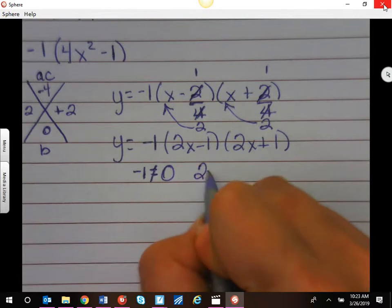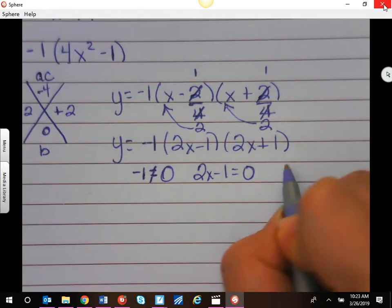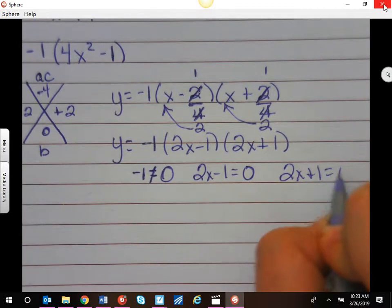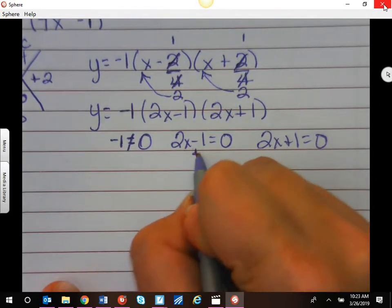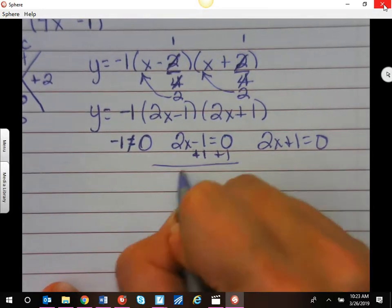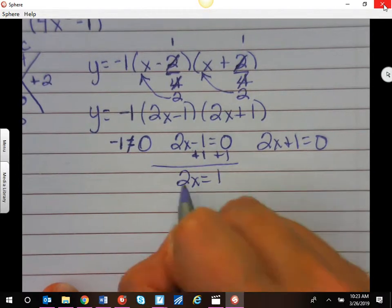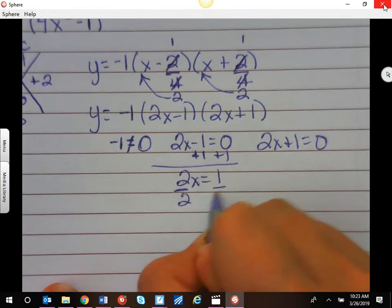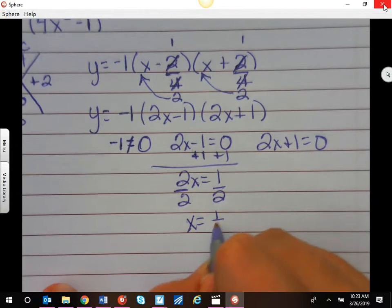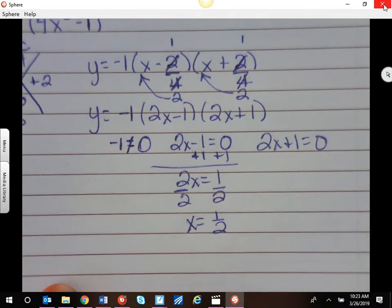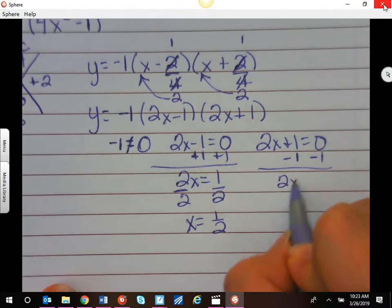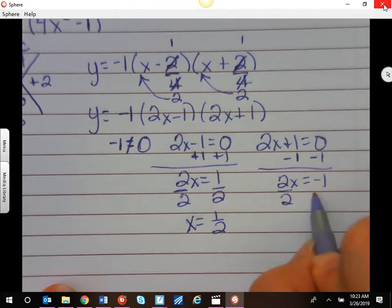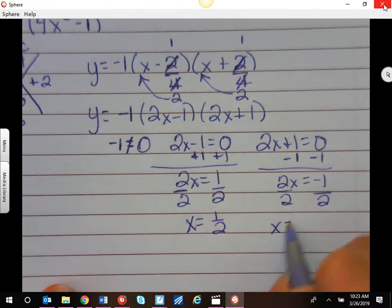So then I have 2x minus 1 equals 0, and I have 2x plus 1 equals 0. How do I undo a minus 1? I add 1, 2x equals 1, I'm multiplying, so I'm going to divide, so I have a root at 1 half. Over here, to undo a plus 1, I'm minus 1, and again, divide, x equals negative 1 half.